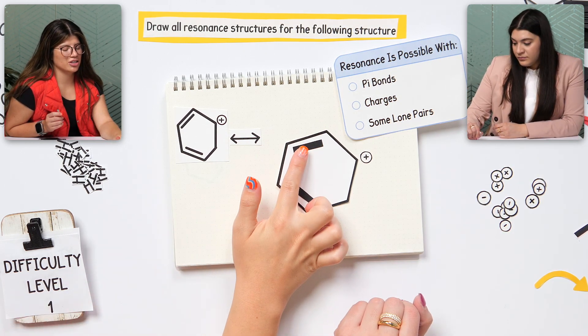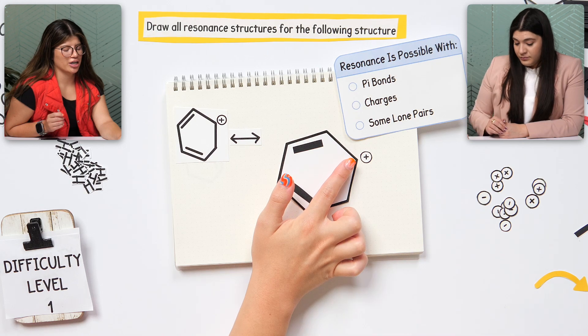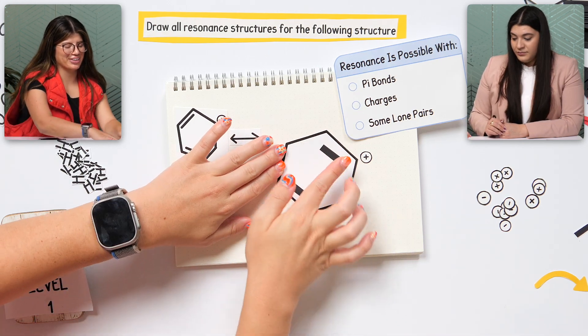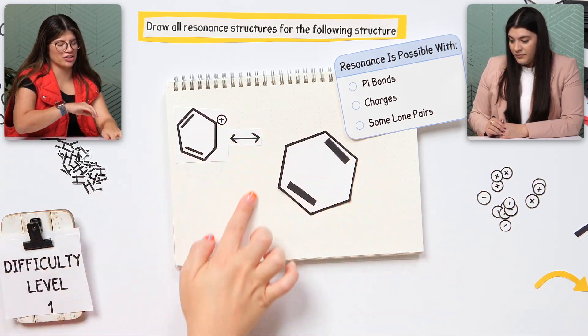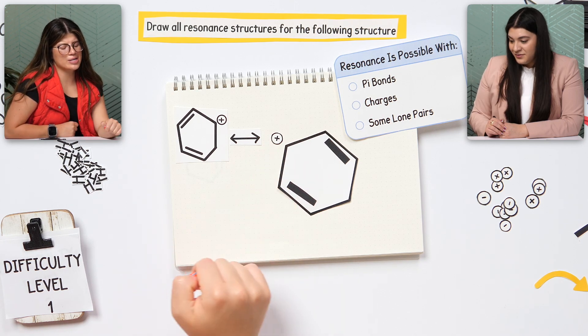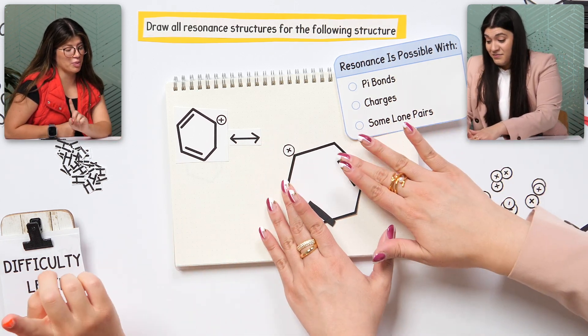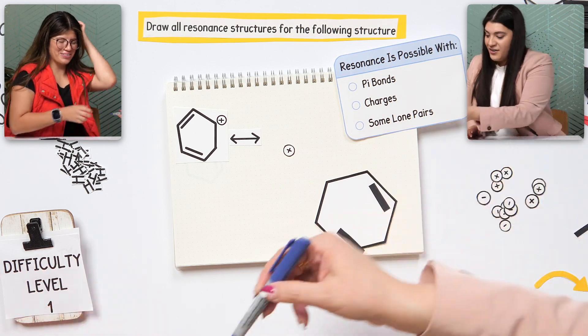So this could move here. Good. And then, I guess I could do that, which would change the charge on this one. Beautiful. You're right. That's right. So that would be one. That's the first structure. Oh, yay. Let's draw that out.